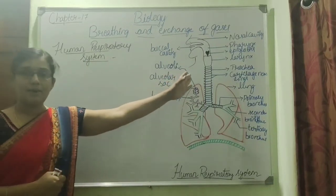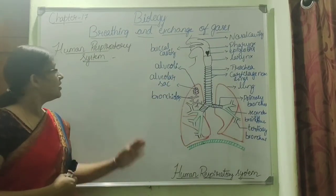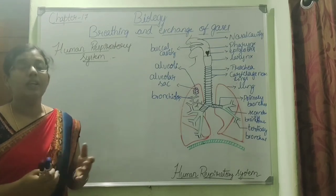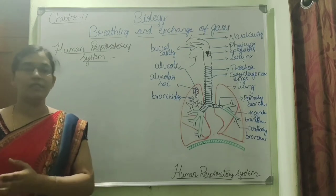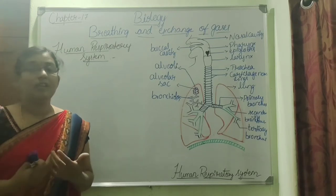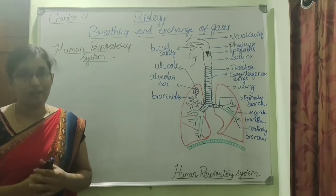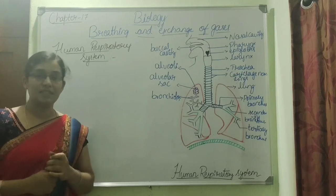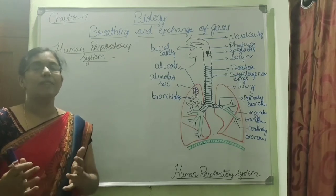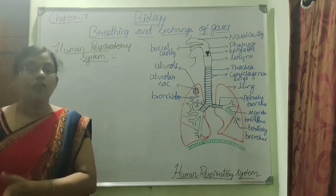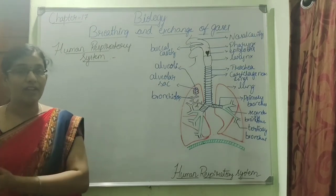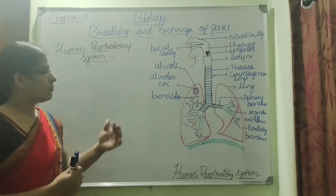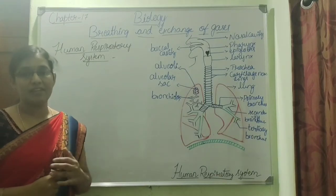Let us discuss the human respiratory system. We have previously discussed respiratory organs, which depend on the type of organism, their habitat, and level of organization. Human beings have an organ system level of organization. The organ system involved in the process of respiration or exchange of gases is called the respiratory system.